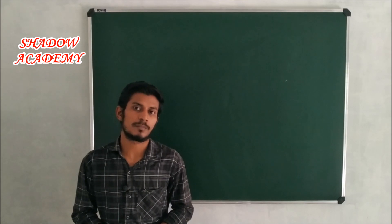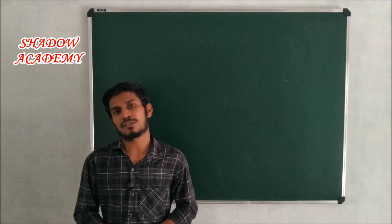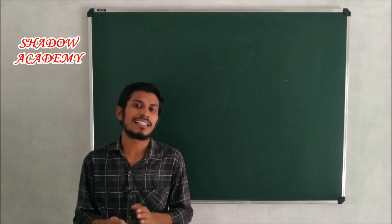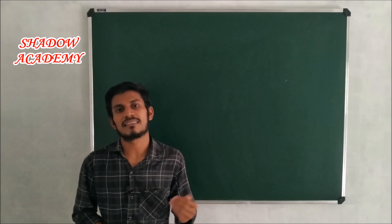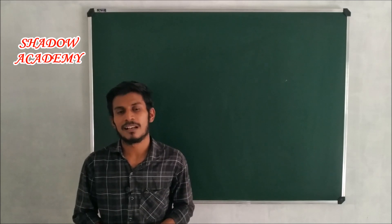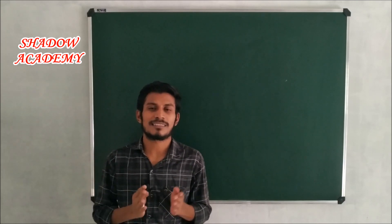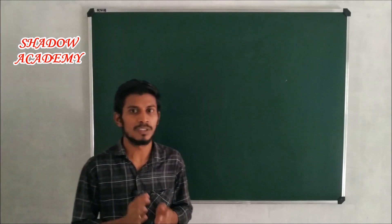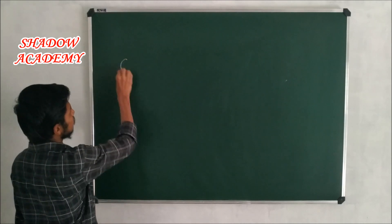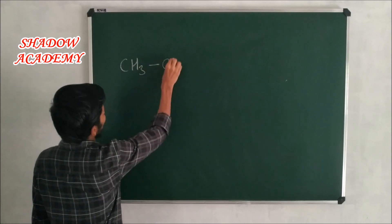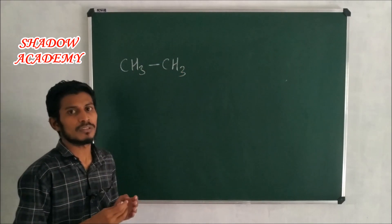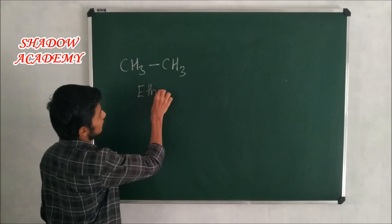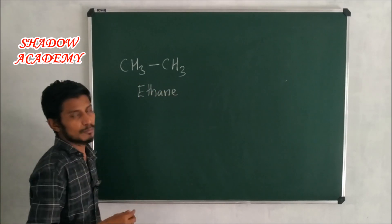Saturated hydrocarbons have two classifications: alkanes and cycloalkanes. Alkanes have open chain structures with all single bonds. For example, CH3-CH3 is the ethane molecule — a single bond between two carbon atoms.